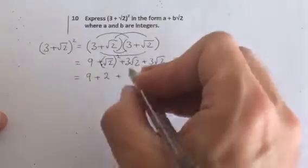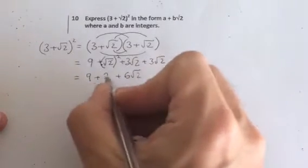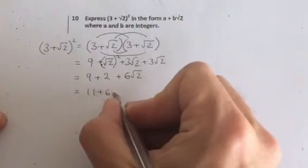And then we've got 3 lots of √2 and another 3 lots of √2, which gives me 6√2. 9 plus 2, 11 plus 6√2.